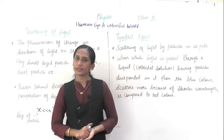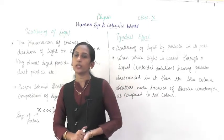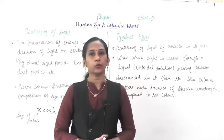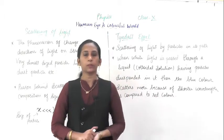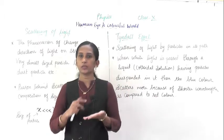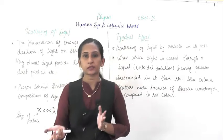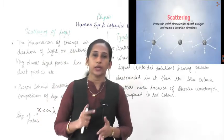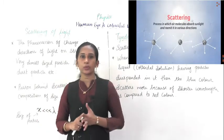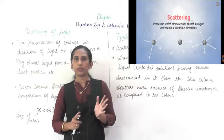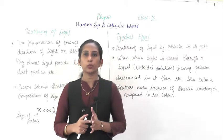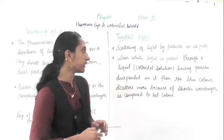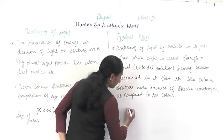So what is the scattering of light? As you have studied, in white light if you use a prism or any glass material which can disperse the light into 7 colors, you will see 7 different colors: violet, indigo, blue, green, yellow, orange, red — that is the VIBGYOR pattern.